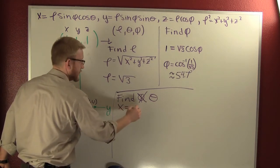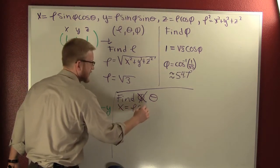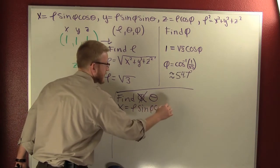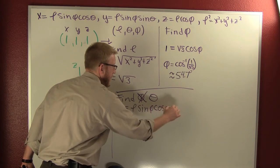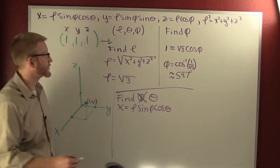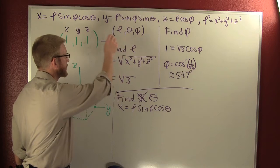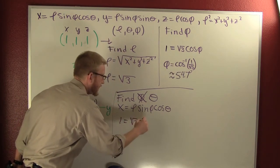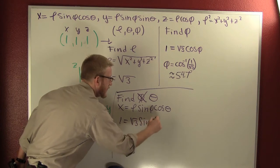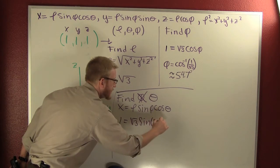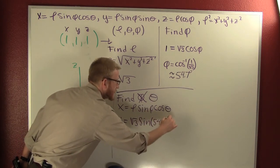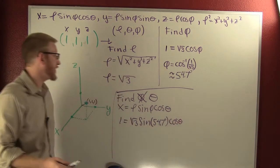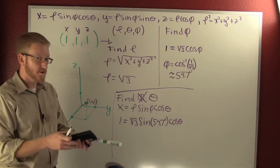X is rho sine phi cosine theta. So then x is one. This is root three sine of 54.7 degrees cosine theta.